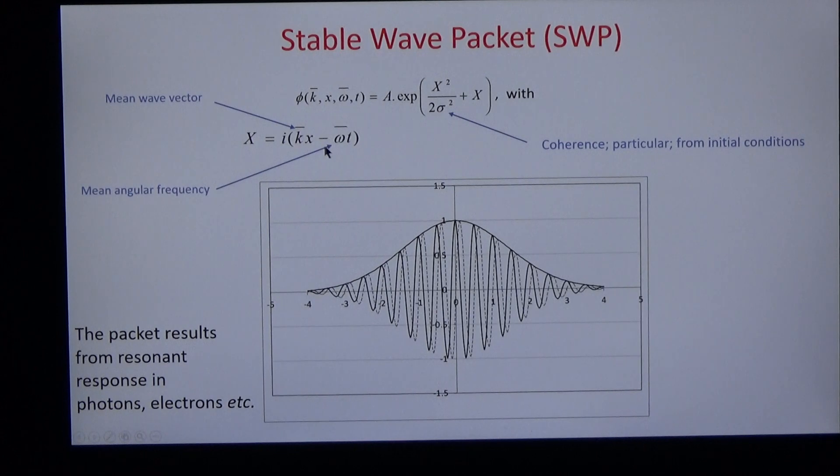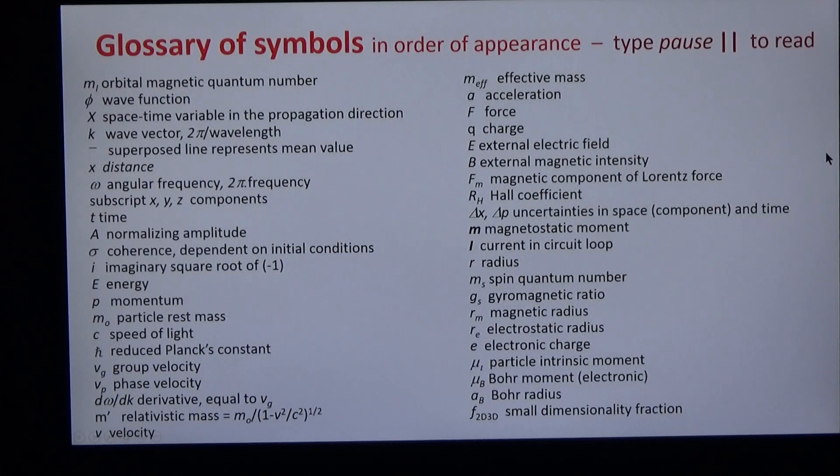And it's best described by the stable wave packet. Notice three features. Omega bar is the mean angular frequency. K bar is the mean wave vector. And sigma is the coherence. It's singular, and it depends on initial conditions.